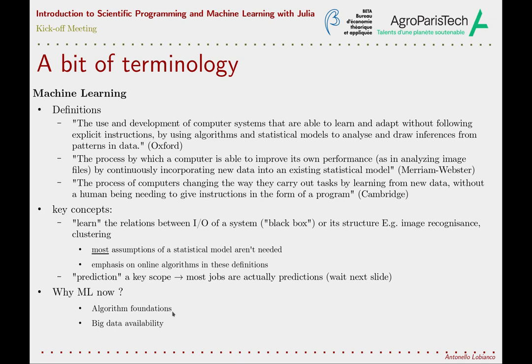The availability of data to train algorithms has exploded with the digitalization of society — we are now able to collect large amounts of data, including personal data. This opens many issues around privacy, which are not discussed in this course but are important. Finally, the third pillar: we have the algorithms and the data, but only recently have we obtained the means to handle them — to process huge amounts of data and run algorithms over them. Think about graphical processing units, or the democratization of cloud infrastructures. It is the combination of these three factors together that allowed the rapid development of machine learning techniques in everyday aspects of society.